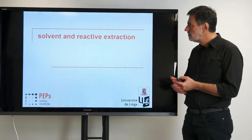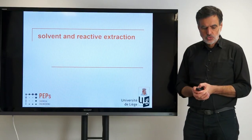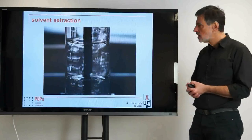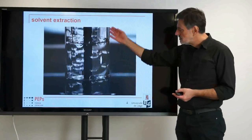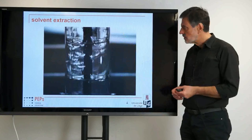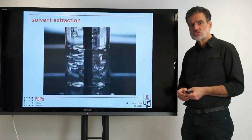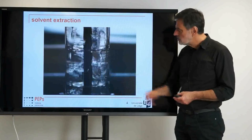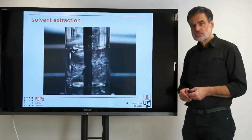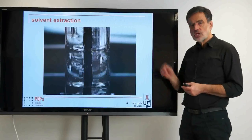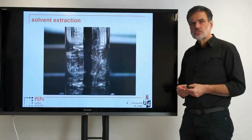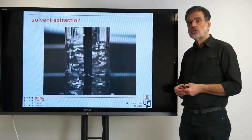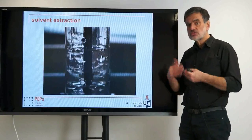One of the topics is solvent and reactive extraction. This is a typical pulsed sieve tray extraction column where you see droplets rising — that's an organic phase. At the same time, you have a counterflow of aqueous phase, so two liquid phases. You see the internals, in this case sieve trays, that are pulsated, moving up and down. This is a typical process used in chemical industry and other industrial branches for separating components.